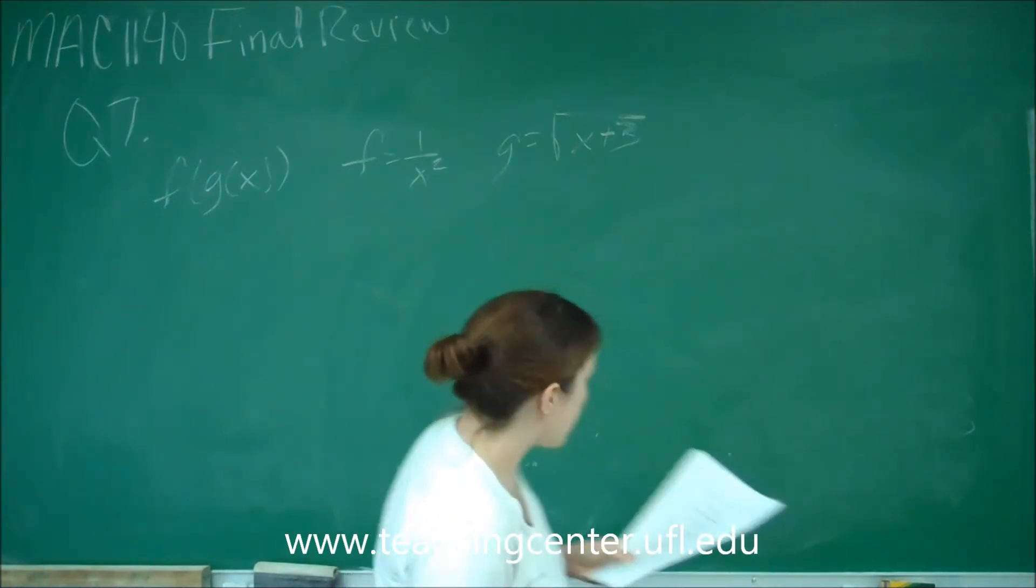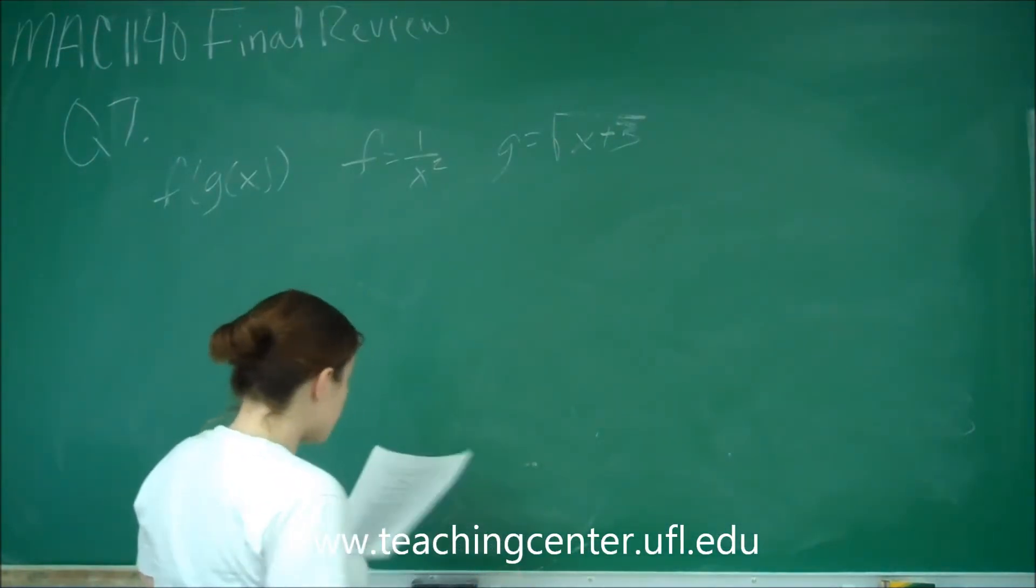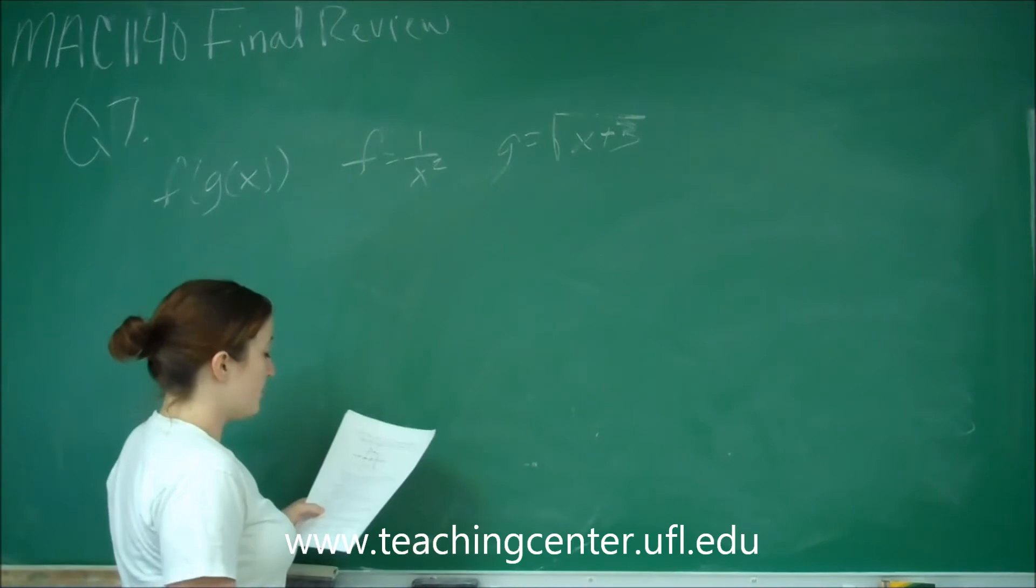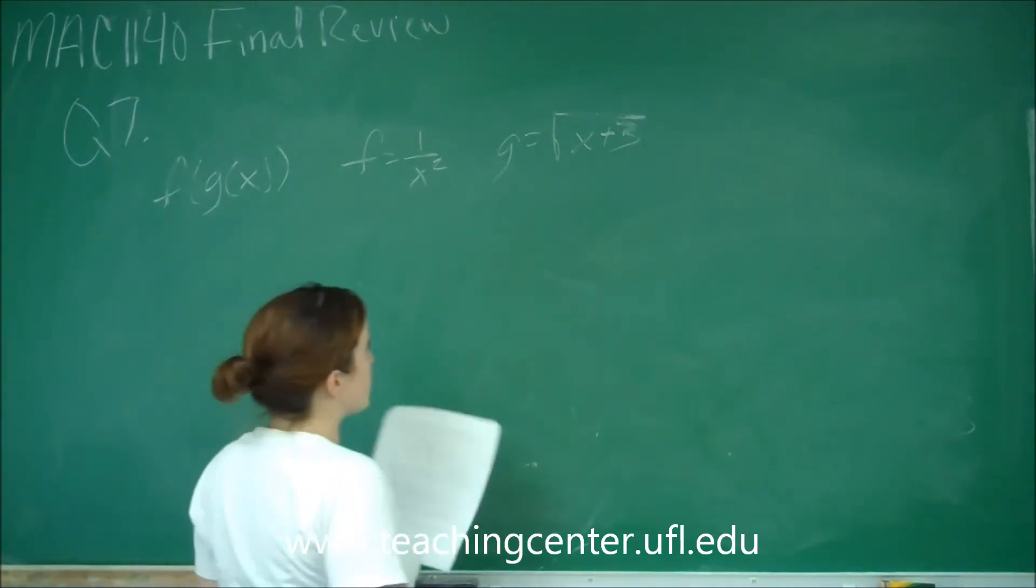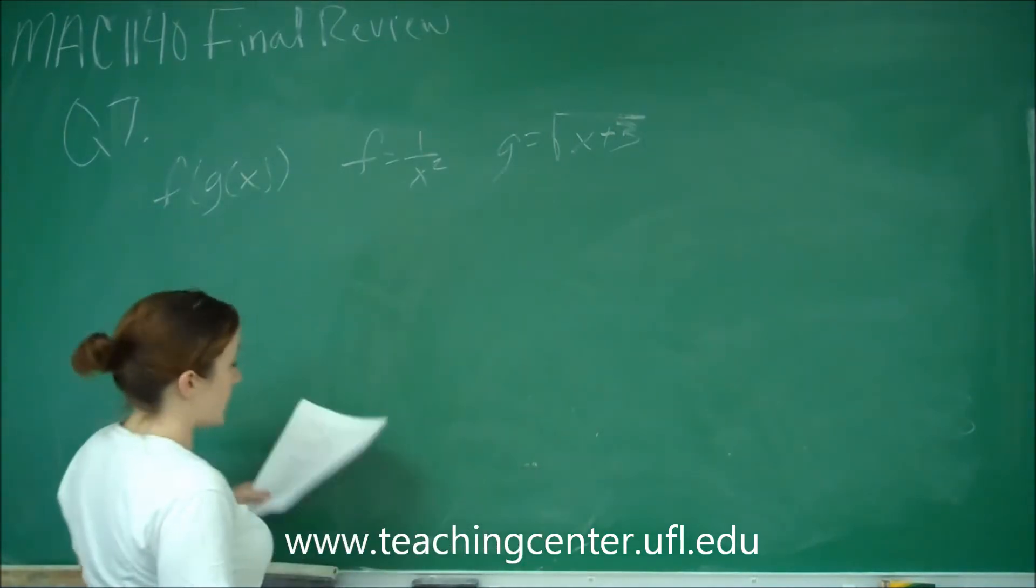For this question, it says we're going to find the composite function and its domain. When f of x is equal to 1 over x squared and g of x is equal to the square root of x plus 3, we want to find f of g of x.